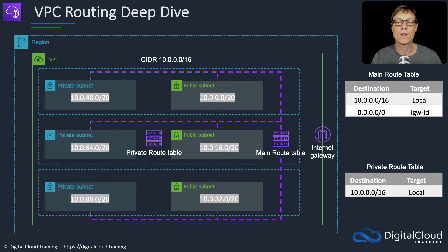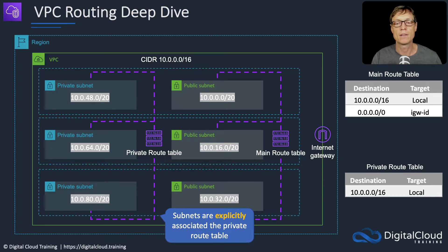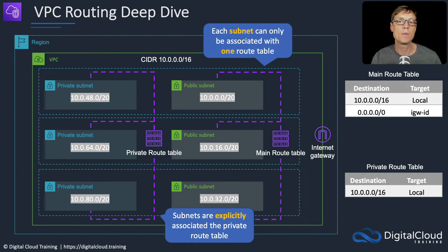What we're doing is creating a private route table. The private route table is going to be associated explicitly with the private subnets. Each subnet can only be associated with one route table at a time, and you can change that whenever you want to.